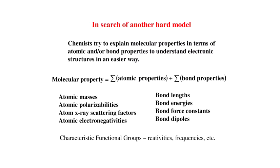Then we were looking for another hard model. Chemists tried to explain molecular properties in terms of atomic and bond properties in order to understand electronic structures in an easier way. If I have a molecular property, I would like to express it as a sum of atomic properties plus a sum of bond properties — these are easier to understand. This works very well for atomic masses, polarizabilities, X-ray scattering factors, and electromagnetic activities. Bond properties are more common still: bond lengths, bond energies, bond force constants, bond angles. A consequence of all this is characteristic functional rules, which are used to explain chemical reactivities and frequencies.